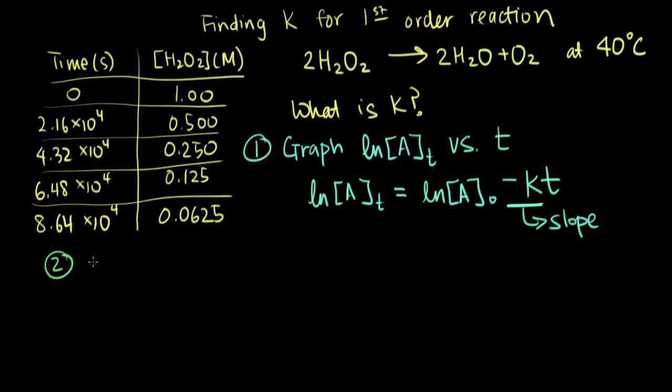So what makes first-order reactions special is that their half-life, or T1 half, is constant. And not only is it constant, it is related to the rate constant K. So our half-life does not change over time, and we have an equation. So T1 half is equal to the natural log of 2 over K.